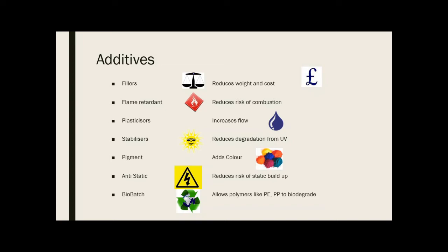Stabilizers prevent a polymer from breaking down under UV light or sunlight — for example, adding stabilizers to a plastic garden chair stops it from fading or degrading. Pigments allow you to change the colour. Anti-static additives stop plastic from becoming static and attracting dust, by attracting a tiny amount of moisture so dust cannot adhere. Bio-batch additives allow polymers like PE or PP to biodegrade.